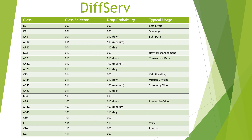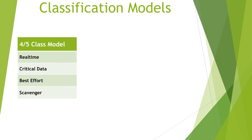This might seem a bit intimidating at this point. You might be thinking: which traffic goes into which class? Where does web browsing go? What about database transactions, social media, or my custom application? Well, let me help simplify this for you. You don't need to use every combination of class and drop probability. You might keep it quite simple with only four or five classes. In fact, if you're beginning a brand new QoS deployment, this is a really good place to start.